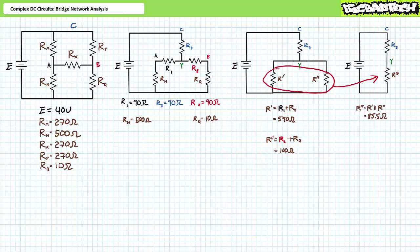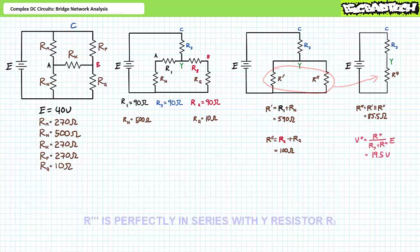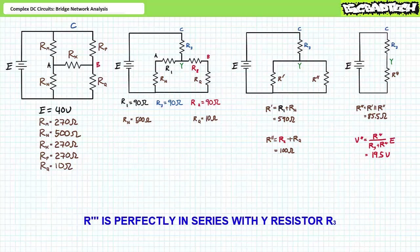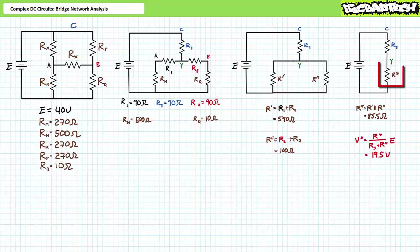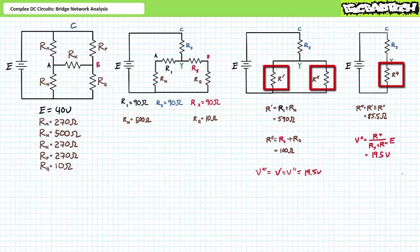R-single-prime and R-double-prime are in parallel with one another, a simplification R-triple-prime with a value of 85.8 ohms. R-triple-prime is perfectly in series with Y resistor R3 — a perfect setup for the voltage divider rule. An application of the voltage divider rule demonstrates V-triple-prime is roughly 19.5 volts. Since elements in parallel share the same voltage, V-triple-prime equals V-single-prime equals V-double-prime, all roughly 19.5 volts.